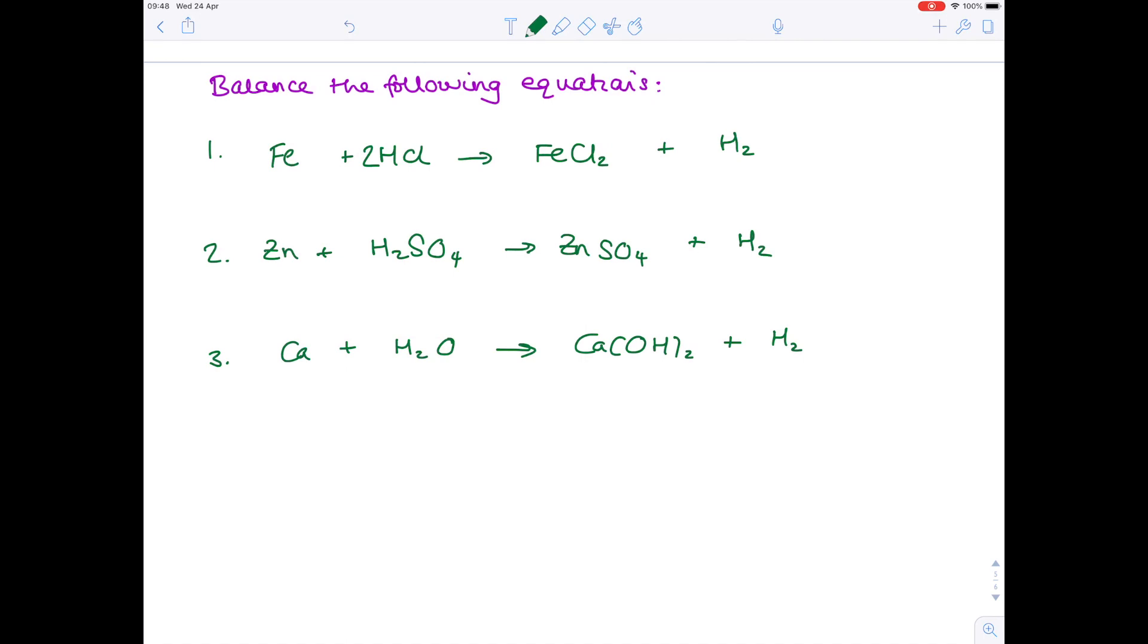Now we're balancing calcium reacting with water to form calcium hydroxide and hydrogen. I can immediately see that I don't have enough oxygens on the left hand side. So I'm going to put a two there. Let's double check. We have one calcium on each side, four hydrogens on each side, two oxygens. It's balanced.